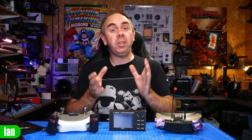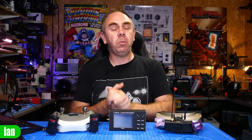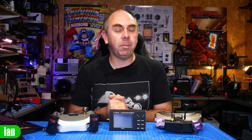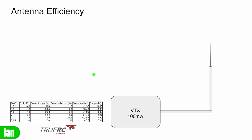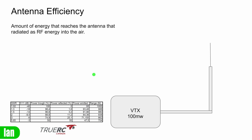Whilst SWR is important, it is not the only factor that affects antenna performance. The next thing we're going to talk about is antenna efficiency, because this is just as important as SWR in many ways. Efficiency is the amount of energy that reaches the antenna that is then radiated as RF energy. We can have our output go into the antenna and at this point there is no power reflected back, so all of the RF energy has reached the antenna — but that doesn't mean all of that energy is being converted into radio waves, because there are also losses within the antenna itself.